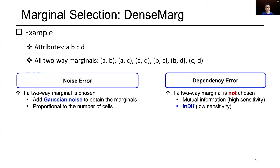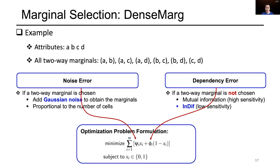The most widely used metric to measure the correlation of two attributes is mutual information. However, the sensitivity of mutual information is high. To reduce the sensitivity, we propose a new metric named INDIF, which calculates the L1 distance between the real two-way marginal and the two-way marginal generated assuming independence of the two attributes. To strike the trade-off between the noise error and the dependence error, we formulate an optimization problem to choose marginals. Here, psi_i and phi_i represent the noise error and dependency error of marginal i respectively. Xi is a binary value indicating whether marginal i is selected.